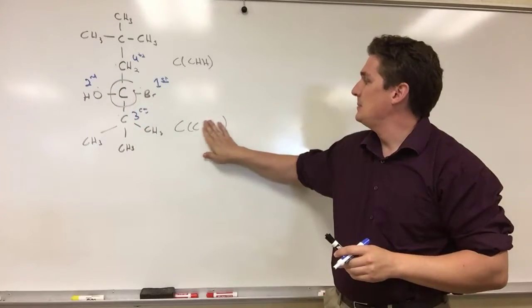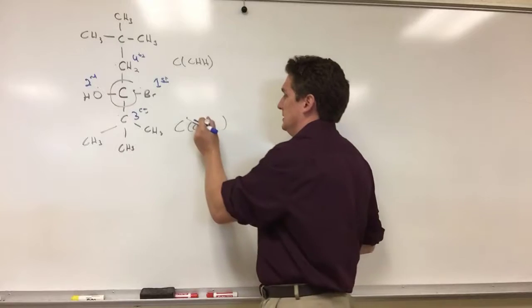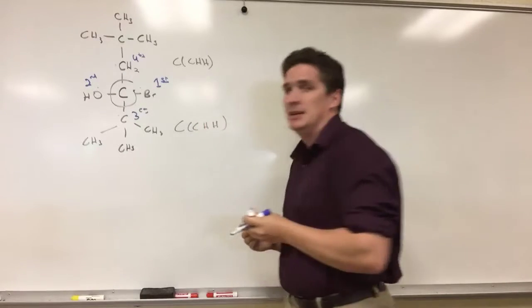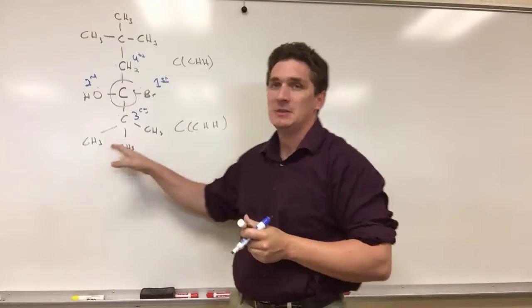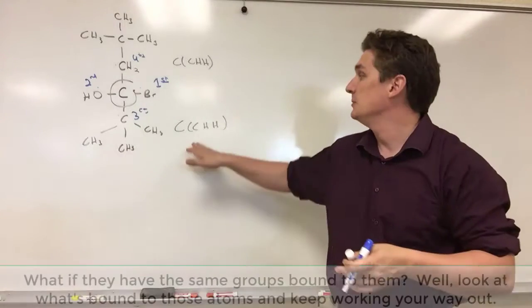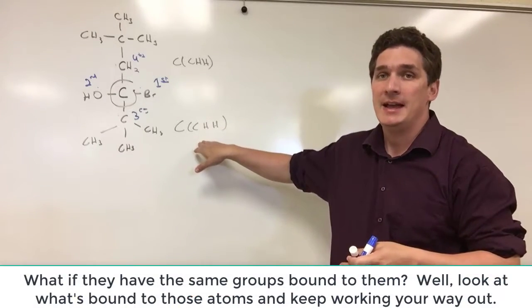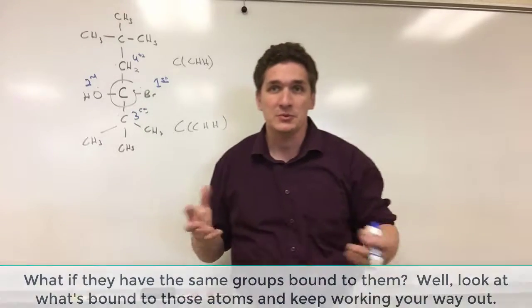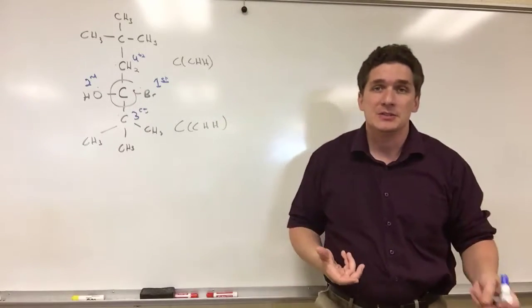Now let's say that these happen to be both C, H, and H. In this case, we would take what we'd expect to be the highest priority carbon, or highest priority thing that's bound to this carbon, and keep going down the roots. So keep going further and further out. Now another thing to note about this, carbon can form four bonds.